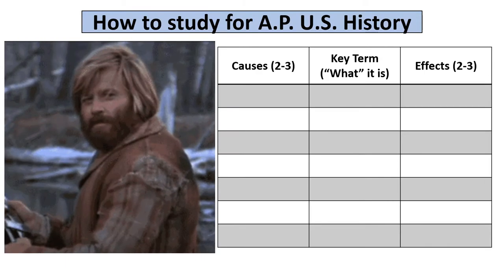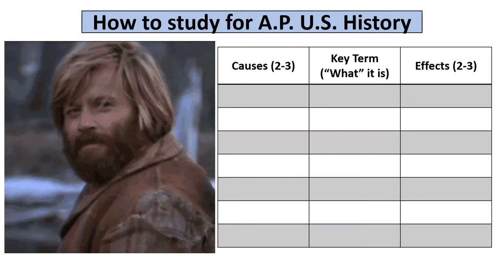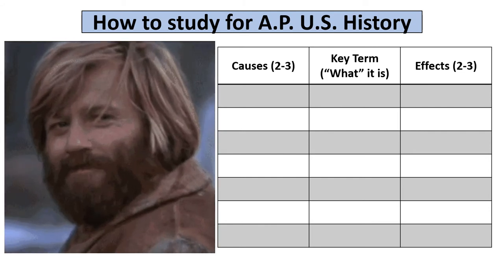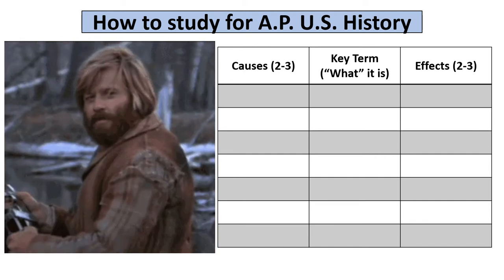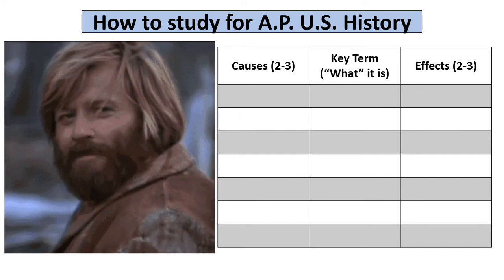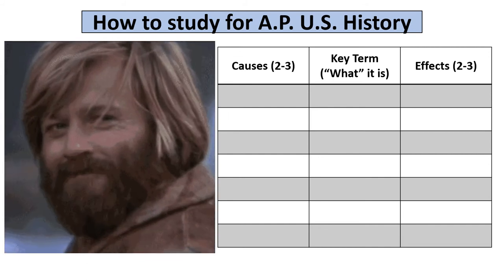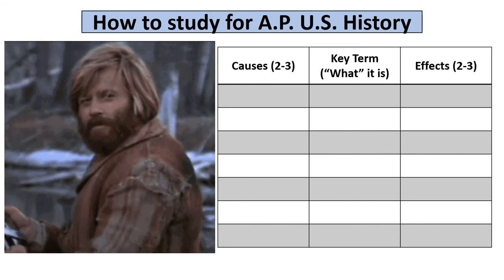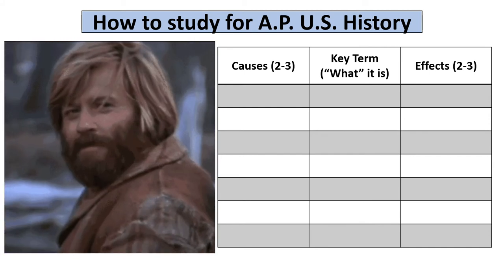Here's the chart I would suggest drawing out. On the left, give me two or three causes — for example, causes of the Columbian Exchange. In the middle column, define what the Columbian Exchange actually is — that's what people are normally used to doing. Then on the right, give me two or three effects and the overall significance. It's not that much more effort, but it'll actually save you time compared to spending eight hours on just that middle column.